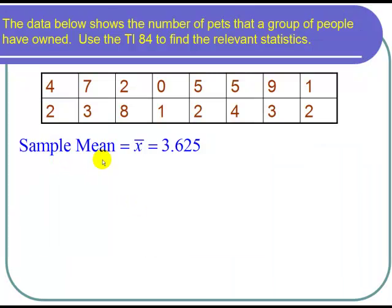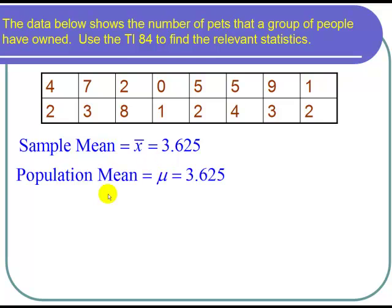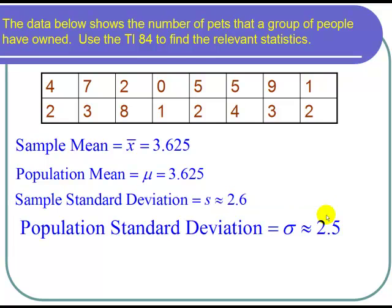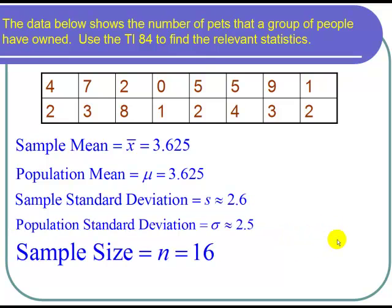So in summary, the sample mean was X bar. That's what you call the average of the sample, which was 3.625. If we consider this population data, then the population mean we call mu is 3.625. If we're considering it to be a sample, then the sample standard deviation is s, which is about 2.6. But if we're considering it to be the population, we use the population standard deviation. The symbol is sigma, and that's about 2.5. And the sample size, which we call n, is 16.